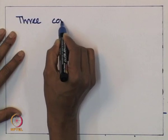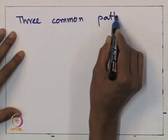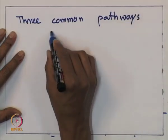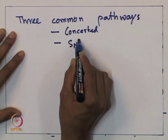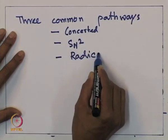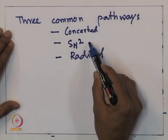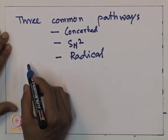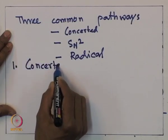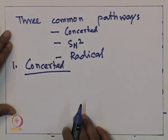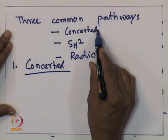There are three common pathways by which oxidative addition can occur: concerted, SN2, and radical. Today's class will mainly discuss these different modes of oxidative addition, starting with the concerted pathway.